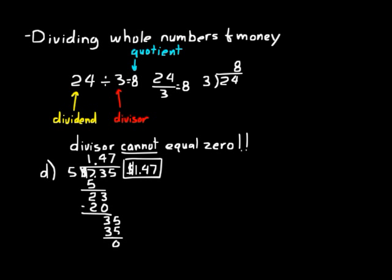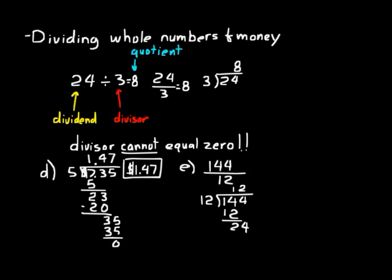Let's do a couple more division problems. First, 144 divided by twelve. You may already know the answer, since twelve times twelve equals 144. Doing long division: twelve goes into fourteen one time; fourteen minus twelve is two. Bring down the four — twelve goes into twenty-four exactly two times, with a remainder of zero. Our answer is twelve. You can verify by multiplying the quotient by the divisor: twelve times twelve gives back the dividend, one hundred forty-four.